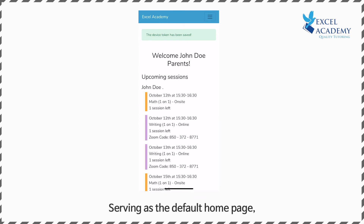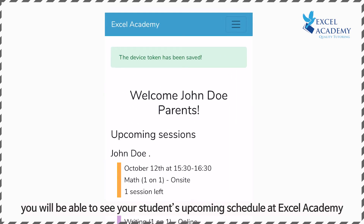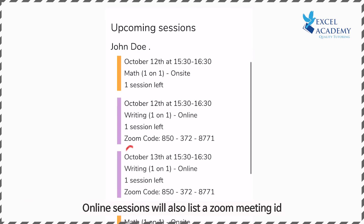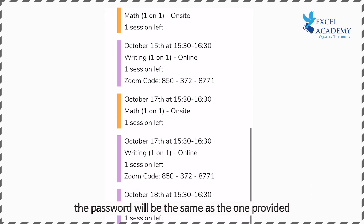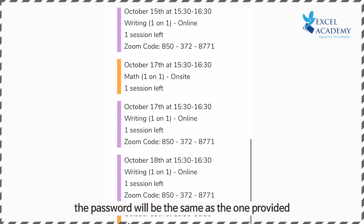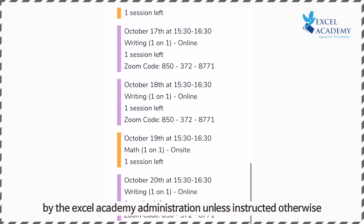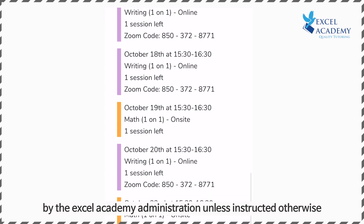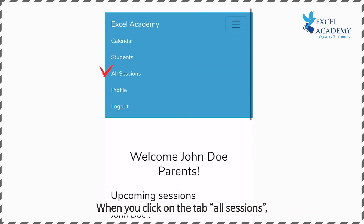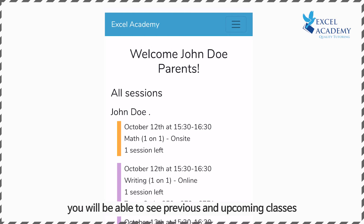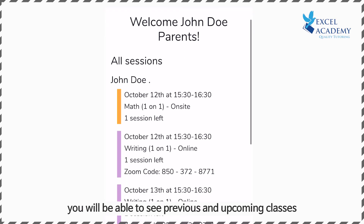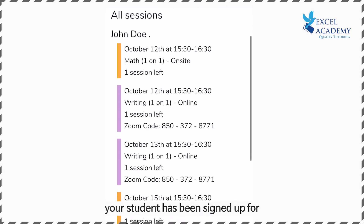Serving as the default home page, you will be able to see your student's upcoming schedule at Excel Academy. Online sessions will also list a Zoom meeting ID. The password will be the same as the one provided by the Excel Academy administration unless instructed otherwise. When you click on the tab 'All Sessions' you will be able to see previous and upcoming classes your student has been signed up for.